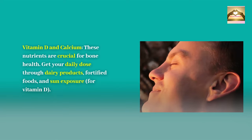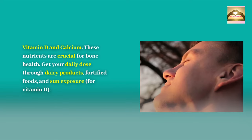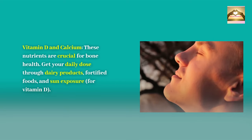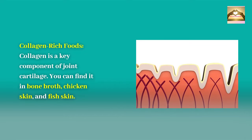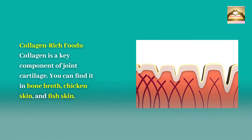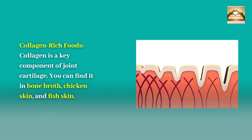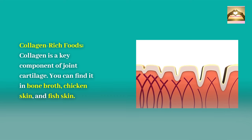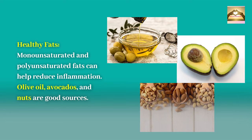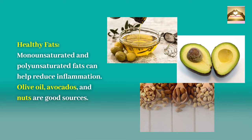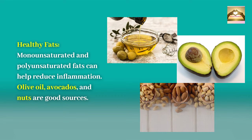Vitamin D and calcium are crucial for bone health. Get your daily dose through dairy products, fortified foods, and sun exposure for vitamin D. Collagen-rich foods: collagen is a key component of joint cartilage and can be found in bone broth, chicken skin, and fish skin. Healthy fats: monounsaturated and polyunsaturated fats can help reduce inflammation — olive oil, avocados, and nuts are good sources.